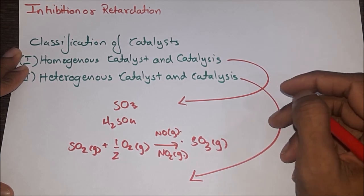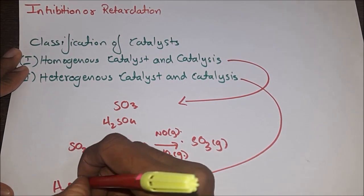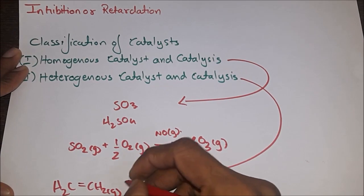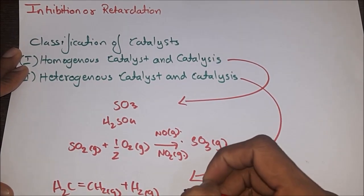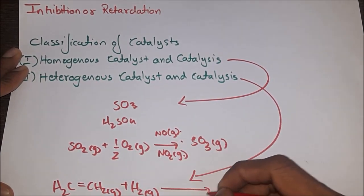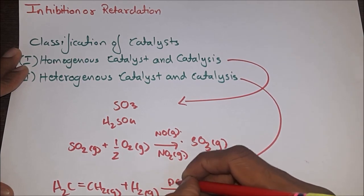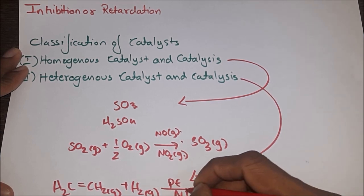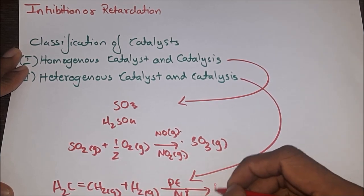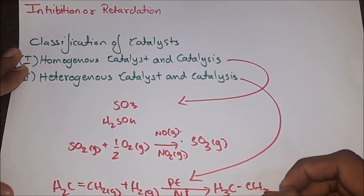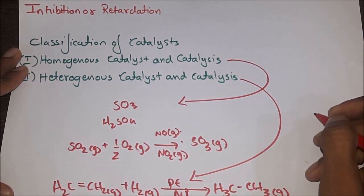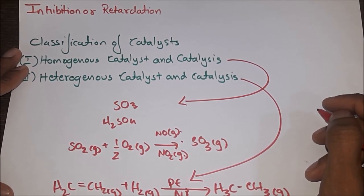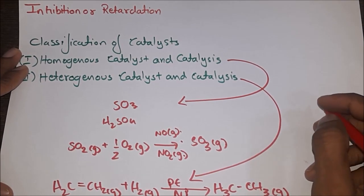For example: CH₂=CH₂(g) + H₂(g) → CH₃CH₃(g) in the presence of nickel or platinum catalyst. This principle is used in the food industry for the conversion of unsaturated vegetable oils to solid fats.